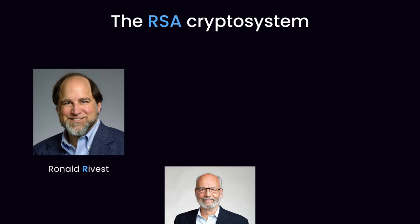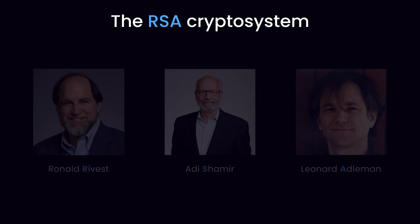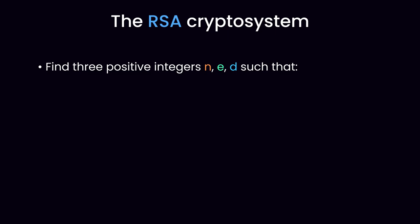This is the idea behind the RSA cryptosystem, publicly described in 1977 by Ron Rivest, Adi Shamir, and Leonard Adelman. Not really sure about the pronunciations here. RSA works by finding three integers, N, E, and D, such that any integer raised to the power of E, and raised again to the power of D, is congruent to that same integer modulo N.